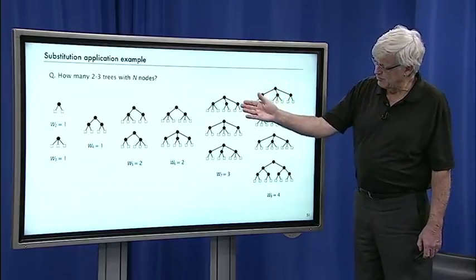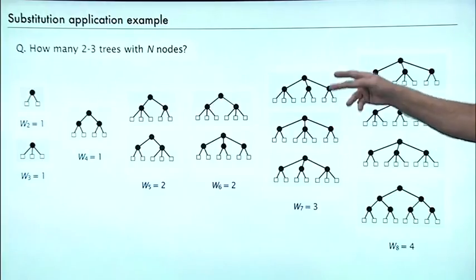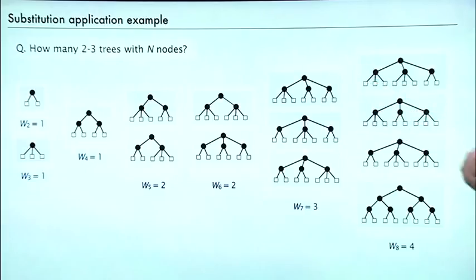There's only one two-three tree with four external nodes, but there's two with five external nodes. It's got to be a two node and a three node, and the three node can be either on the left or the right. There's also two with six external nodes. You could have two threes or three twos and so forth. So how many two-three trees are there with n nodes?